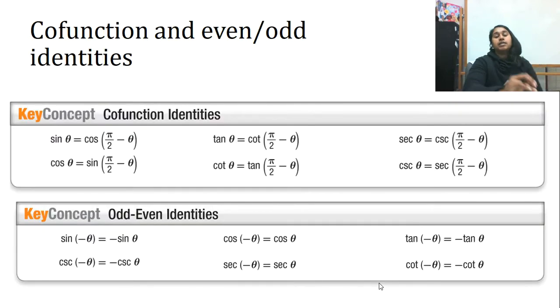Welcome on back, where we're going to briefly talk about the cofunction and even odd identities. These are 12 functions or identities that you can copy down. They will be provided on the formula chart, but again, it's about understanding how to use them.